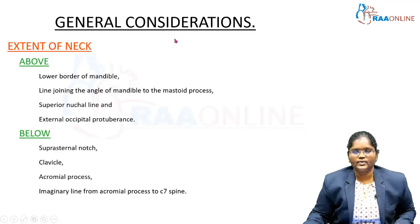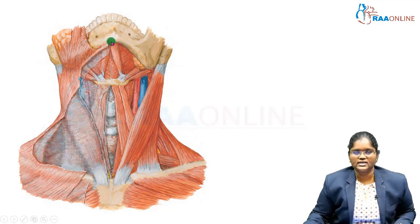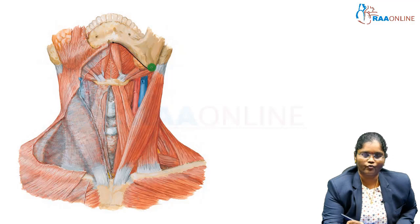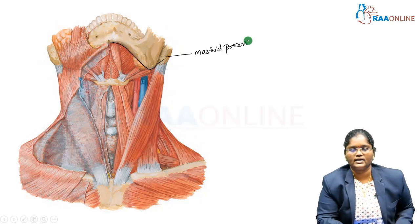Before going to the midline, let's have a general outline about the extent of the neck. The neck is bounded above — this is the anterior triangle of the neck, and the midline median strip we are going to discuss today. Above, it is bounded by the lower border of the body of the mandible. This is the symphysis menti, this is the angle of the mandible, and this is the mastoid process — that is the upper extent of the neck.